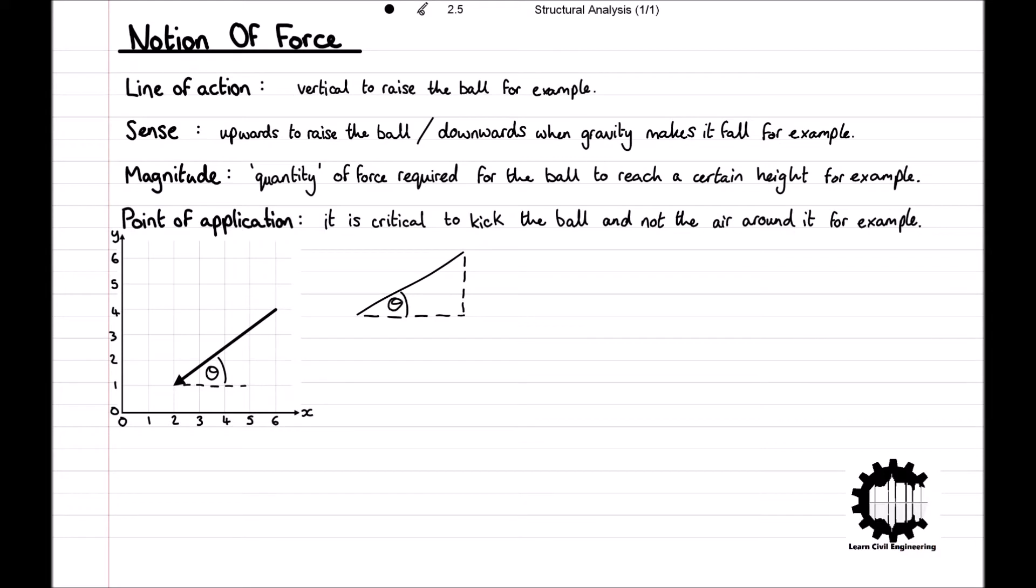In this example, the opposite side to the angle has a length of 3 and the adjacent side has a length of 4. So the angle theta is equal to the inverse tan of 3 over 4, which is 36.9 degrees. So the vector has a line of action of 36.9 degrees from the horizontal x-plane. The point of application is represented by the location of the tip of the arrow. So for us it would be the point xy equals 2, 1.